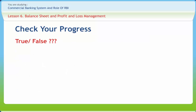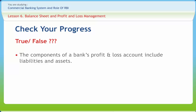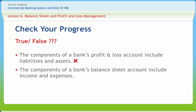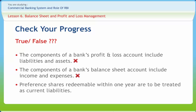Now let us check if we have understood the various concepts discussed in this lesson. The components of a bank's profit and loss account include liabilities and assets — this is wrong. The components of a bank's balance sheet account include income and expenses — this is also wrong. Preference shares redeemable within one year are to be treated as current liabilities — this is right.